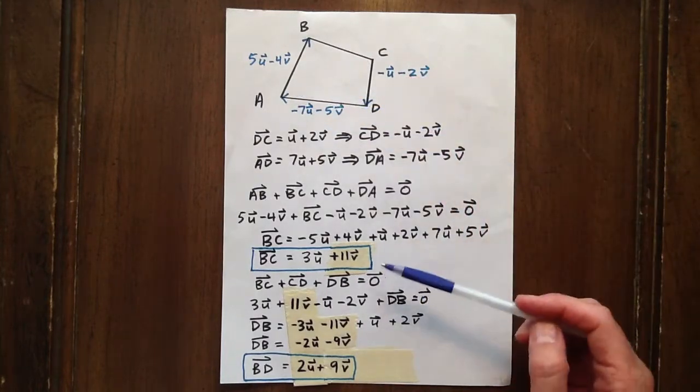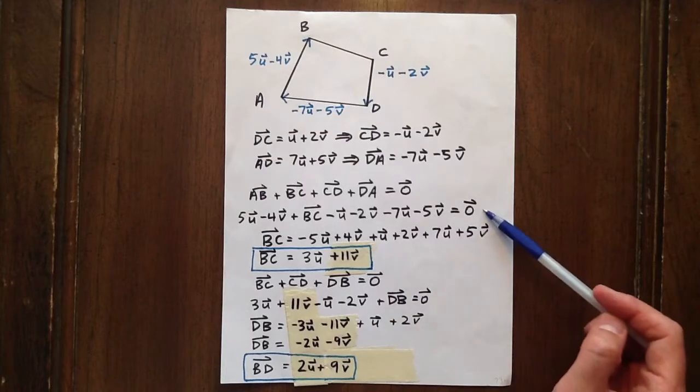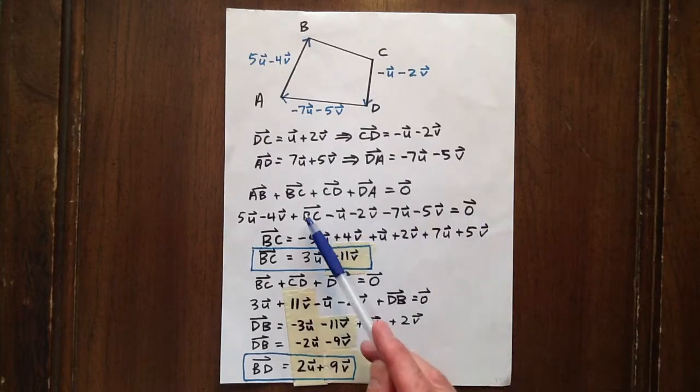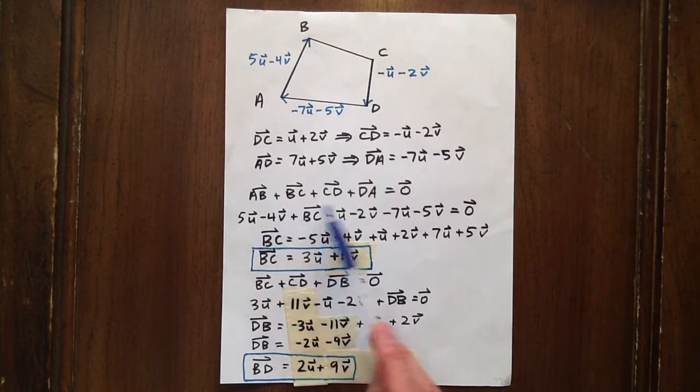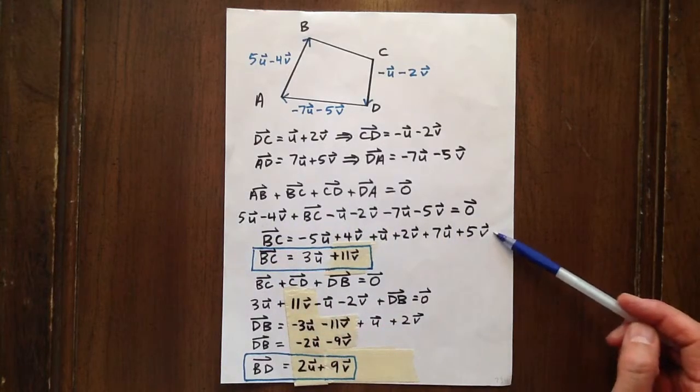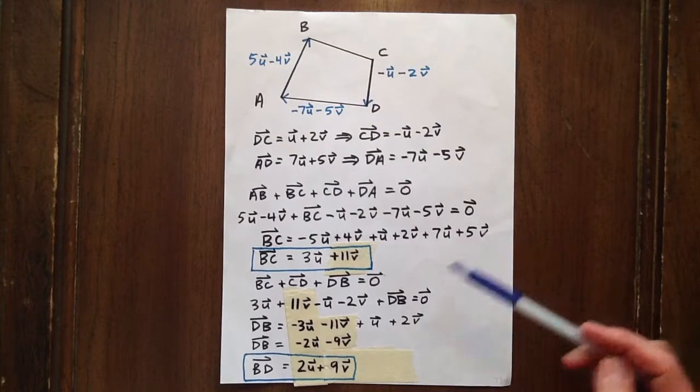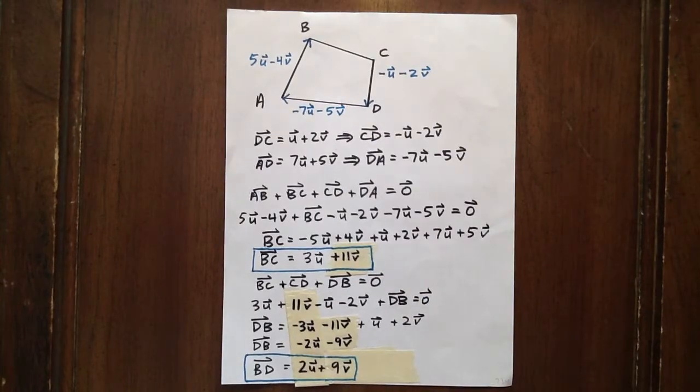And if we leave BC on this side and add and subtract vectors as appropriate to get the other ones on the right hand side and then collect like terms, we see that BC equals 3U plus 11V.